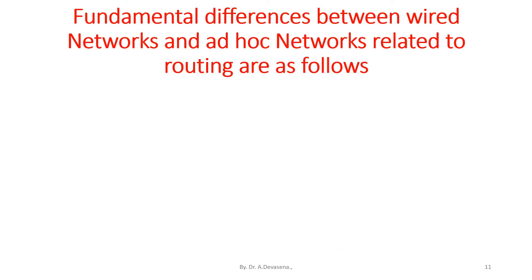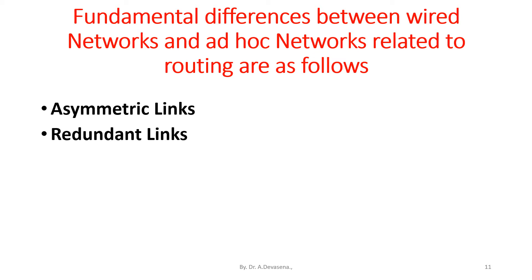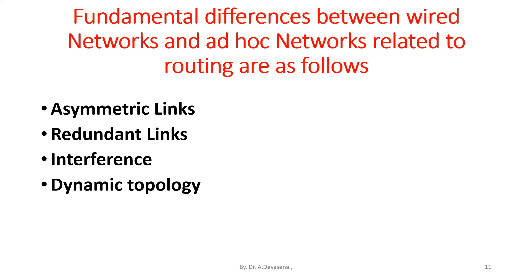The fundamental differences between wired networks and ad hoc networks related to routing are as follows. The first difference is asymmetric links. The second is redundant links. The third is interference. The fourth is dynamic topology. Under these topics, we are going to discuss the differences between wired networks and ad hoc networks in further slides.